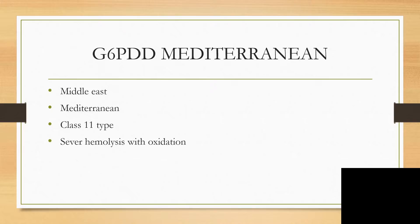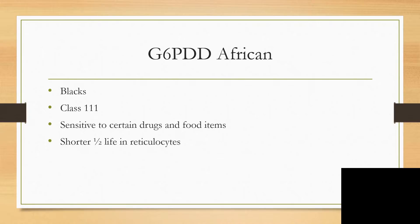The Mediterranean variant is found in the Middle East and Mediterranean region and has Class 2 characteristics. They have severe hemolysis when exposed to oxidants. The G6PD African variant — also called G6PD A — is found in Blacks. They have Class 3 clinical features, are sensitive to certain drugs and food items, and have a shorter half-life affecting the reticulocytes found in them.